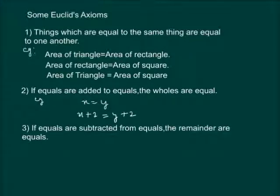Another axiom says that if equals are subtracted from equals, the remainders are equal. For example, if x is equal to y and we subtract 3 from both sides, then x minus 3 will be equal to y minus 3.